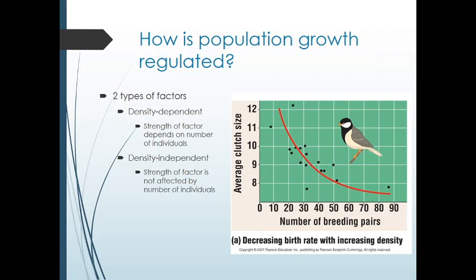Let's think about those limiting resources and how populations are regulated. There are basically two ways: density-dependent factors and density-independent factors. Density-dependent means that the strength of the factor depends on the number of individuals. This can be seen with a decreasing birth rate with increasing density. If you think about some field where chickadees are growing, when you don't have that many mom and dads, each pair has a bunch of babies. But as you get more and more, the more mom and dads you have, the fewer babies you get. The food basically needs to be shared between more individuals — that's a perfect example of a density-dependent factor.